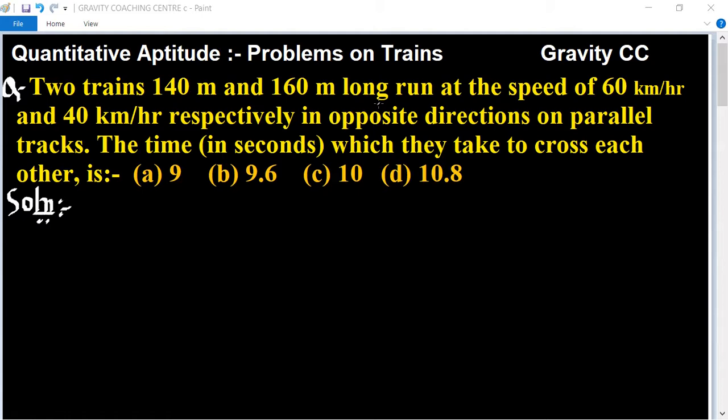Two trains, 140 meter and 160 meter long, run at the speed of 60 km per hour and 40 km per hour respectively, in opposite direction on parallel tracks. The time in seconds which they take to cross each other.